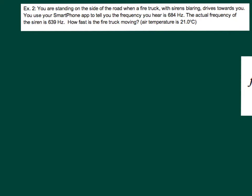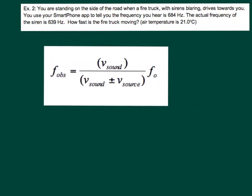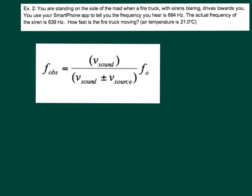So we will be using this equation. This is our Doppler equation. This is the frequency the observer hears, which is 684 Hertz. This is the actual frequency that the object is producing, which is 639 Hertz, and this is the speed of sound which is dependent on air temperature of 21 degrees Celsius. This is the speed of the source, which is what we are actually looking for.